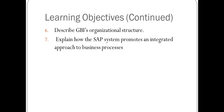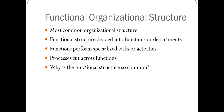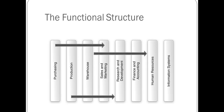The most common organizational structure we talk about is the functions of the department. Human resource is a function or department by itself. Marketing and sales is a department or function by itself. Finance and accounting is a department or function by itself. When you look at the functional structure of a typical organization, there is purchasing, production, inventory management or warehouse, sales and marketing, R&D, finance and accounting, and human resource management. A lot of these business functions overlap.